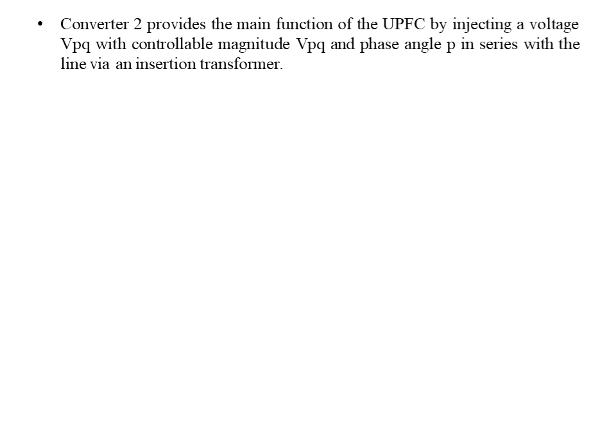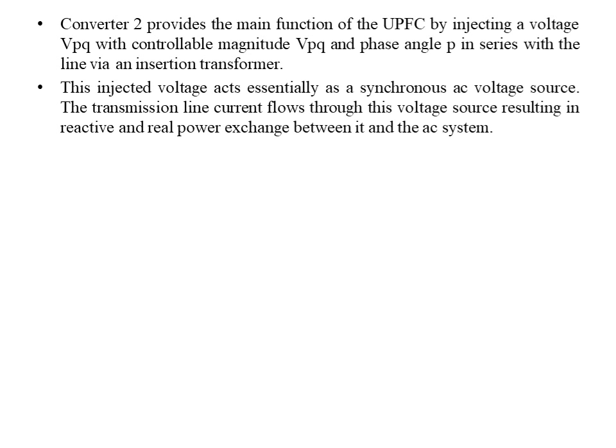Converter 2 provides the main function of the UPFC by injecting voltage Vpq with controllable magnitude Vpq and phase angle Rho in series with the line via an insertion transformer. Out of the two converters, Converter 2 injects the voltage Vpq into the system with phase angle Rho in series with the line using an injection transformer. This injected voltage acts essentially as a synchronous AC voltage source, and the transmission line current flows through this voltage source resulting in reactive and real power exchange between it and the AC system.